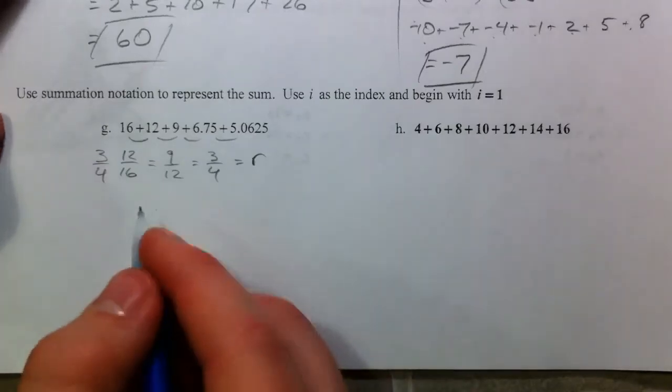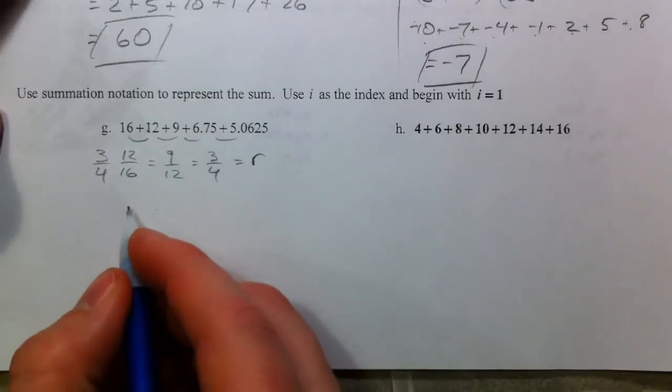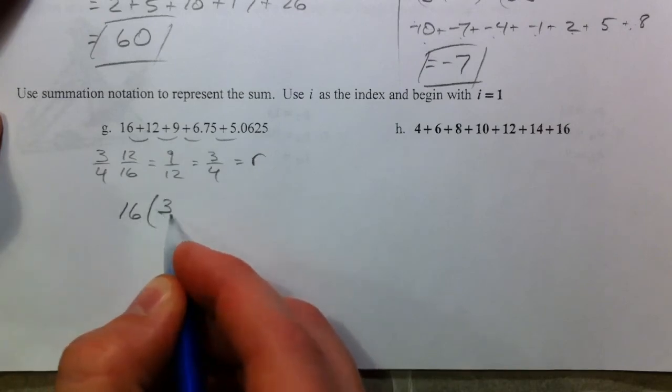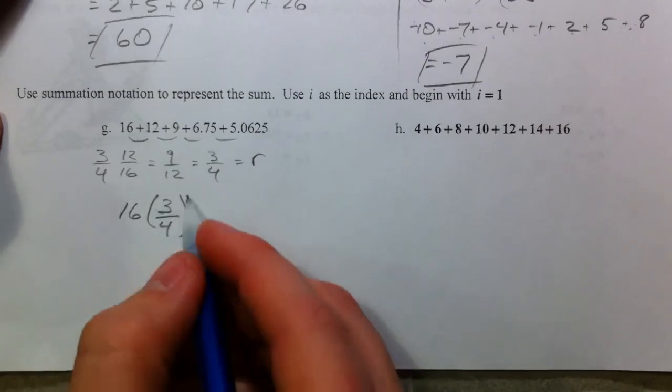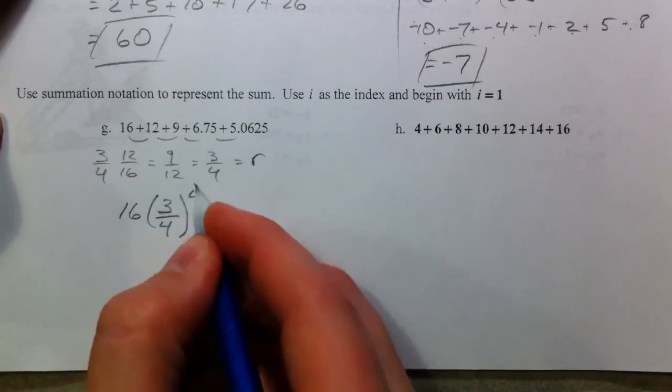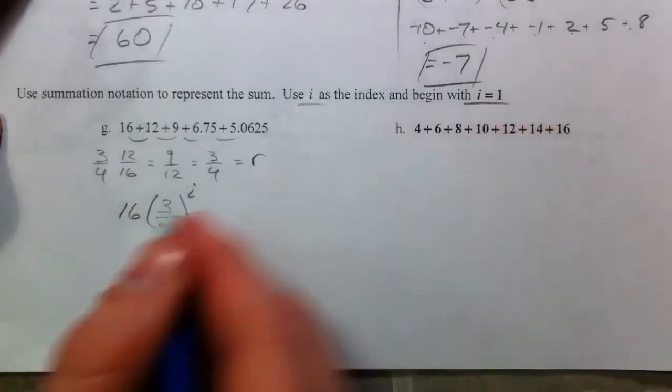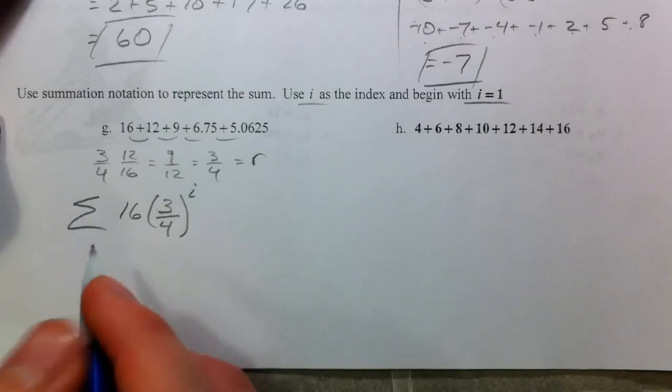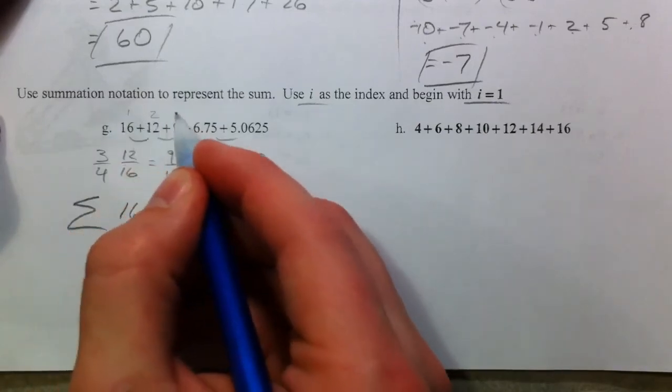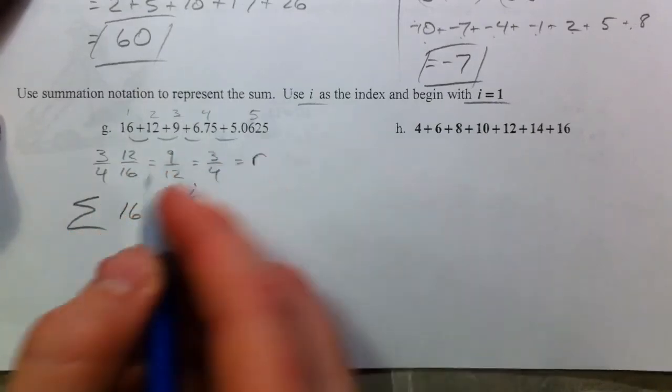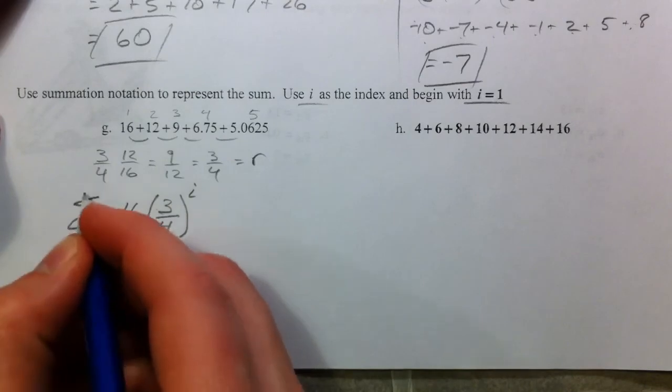And 9 twelfths is also 3 fourths. And so, that must be R. And so, our common ratio. And so, I'm going to say, well, it's starting at 16. It multiplies by 3 fourths every time. And I'm going to use I because, start with I. We're going to use sigma notation. Starting with 1, 2, 3, 4, 5. So, I equals 1 through 5.